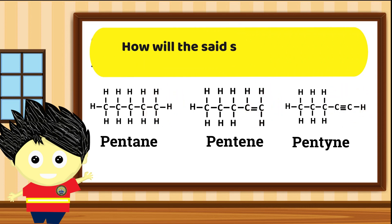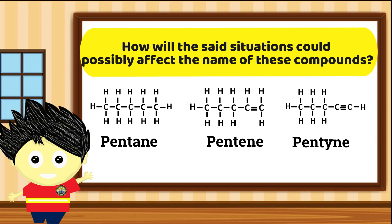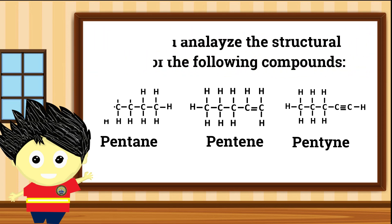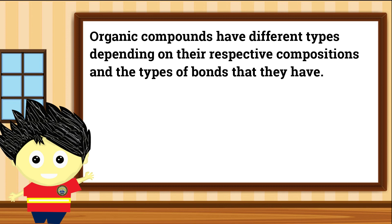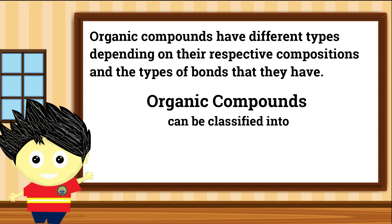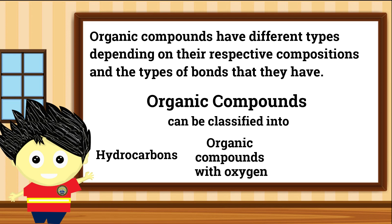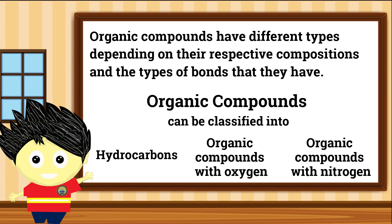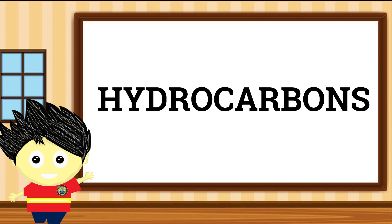Paanong maapektuhan ang magiging pangalan ng mga compounds na ito kung ganito ang kanilang sitwasyon? Organic compounds have different types depending on their respective compositions and the types of bonds that they have. Basically, we can classify them into three types: hydrocarbons, organic compounds containing oxygen, and organic compounds containing nitrogen. But on this video lecture, we are going to give our focus on the group called hydrocarbons.